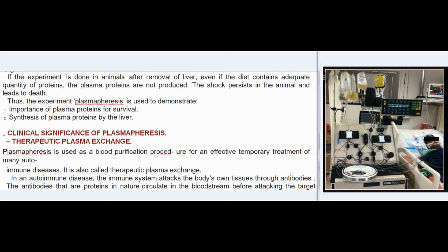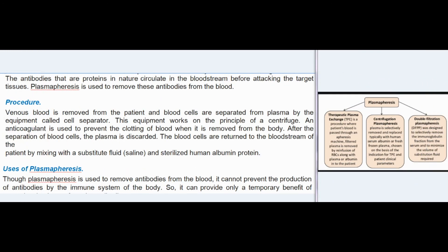Clinical significance — Therapeutic plasma exchange: Plasmapheresis is used as a blood purification procedure for effective temporary treatment of many autoimmune diseases, also called therapeutic plasma exchange. In autoimmune diseases, the immune system attacks the body's own tissues through antibodies. These antibodies, which are proteins, circulate in the bloodstream before attacking target tissues; plasmapheresis removes them from the blood.